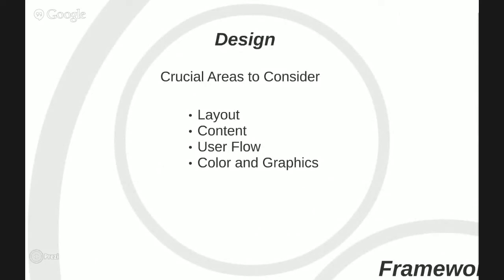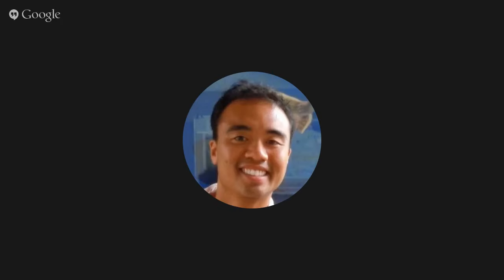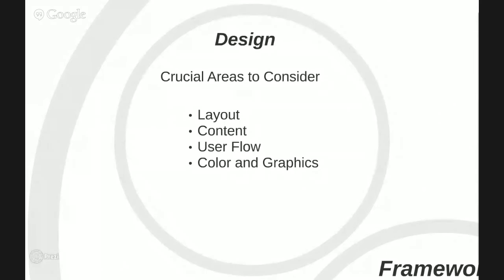Another thing to think about is what sort of content. If you have a news site, you want to put articles in, videos, maybe user responses. And you want to think about how the user is going to interact with the page - for example, on Facebook, users log in, comment on friends' posts, like somebody's pictures. That's what we think about when we talk about user flow and interaction.